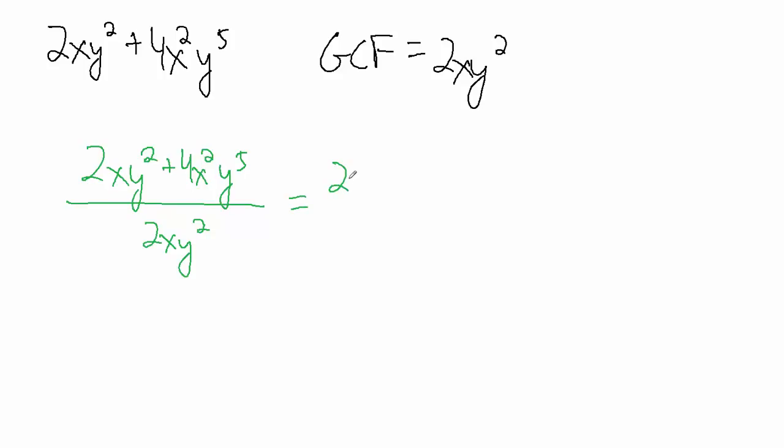And again, split it up into two separate fractions. 2xy squared over 2xy squared, and then plus, so the plus sign here translates to a plus sign over here. 4x squared y to the fifth, divided by 2xy squared.